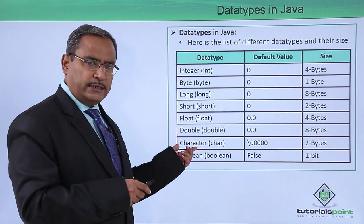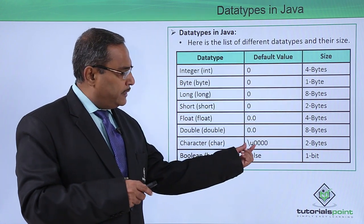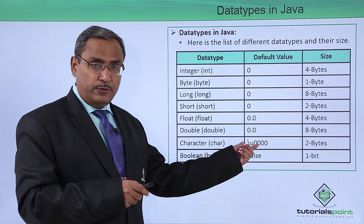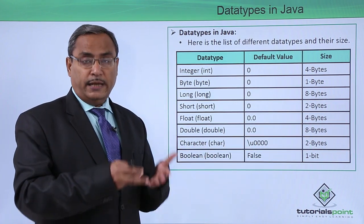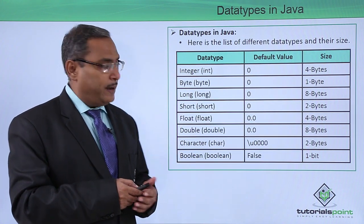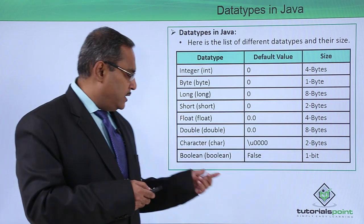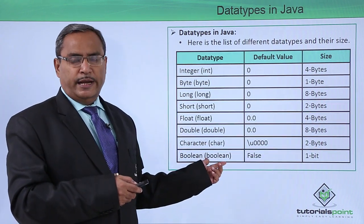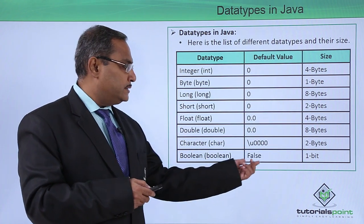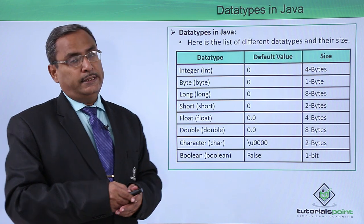Character, written as 'char' in Java code, has a default value of '\u0000'. It can hold ASCII code values or representations in Unicode format, and its size is two bytes. Boolean, written as 'boolean' in lower case, has a default value of false and occupies one byte in memory.